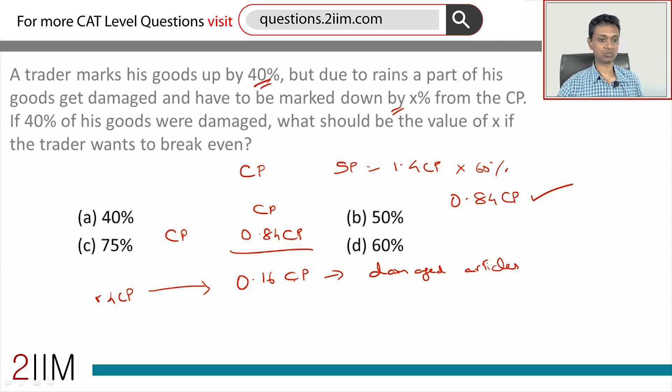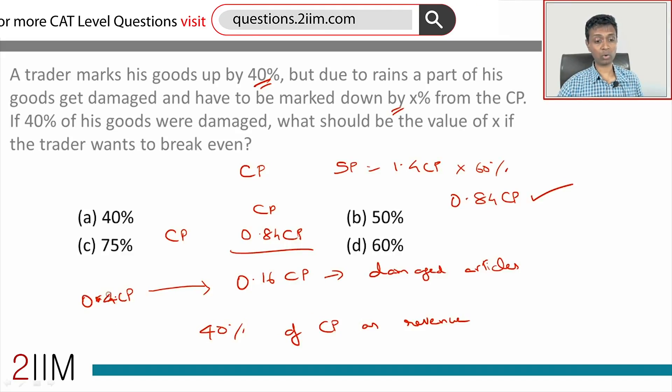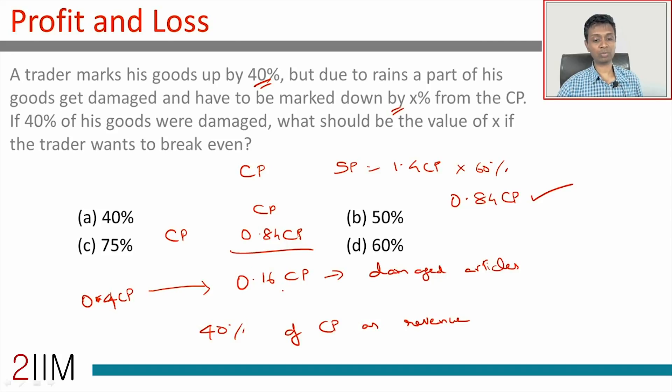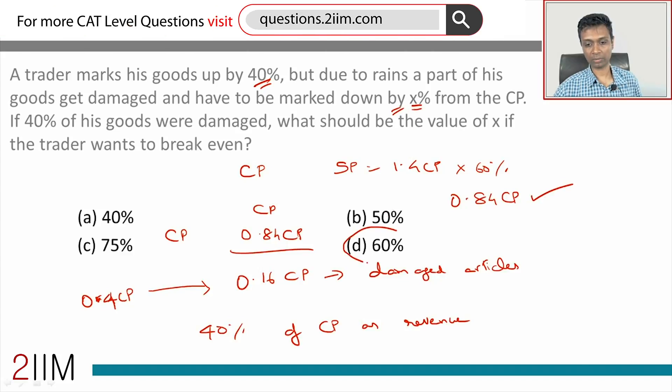From 0.4 CP he is generating 0.16 CP, or he is generating only 40% of cost price as revenue. 40% of 0.4 CP is 0.16 CP, so he is generating only 40% of the price when he actually sells them. Or he is marked down by 60%. This X is 60%.